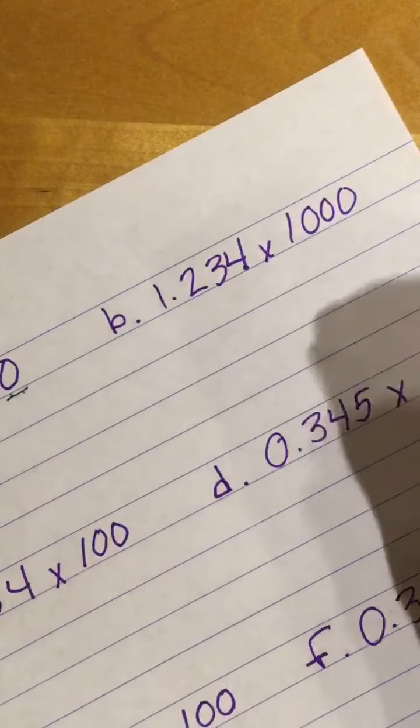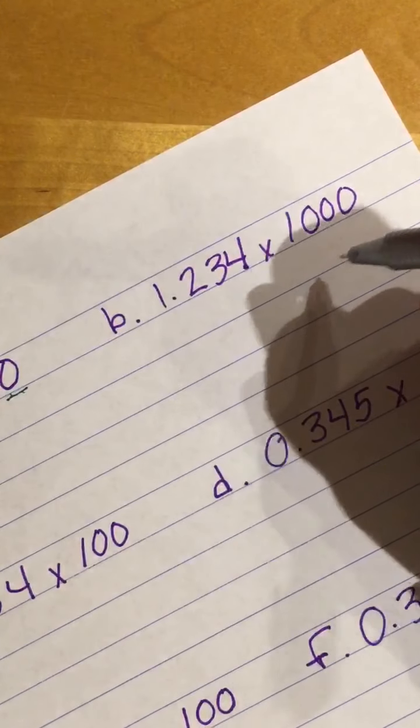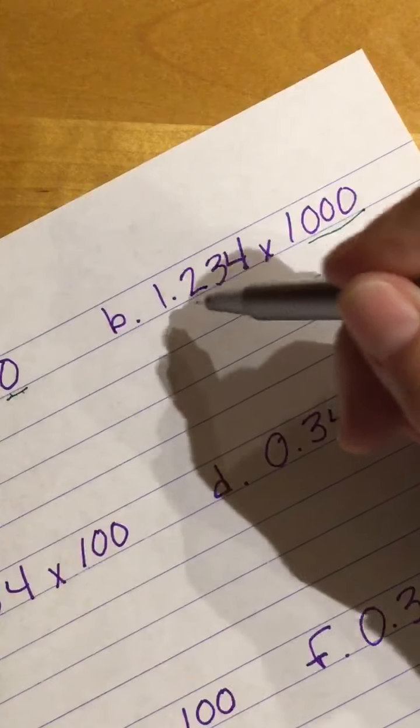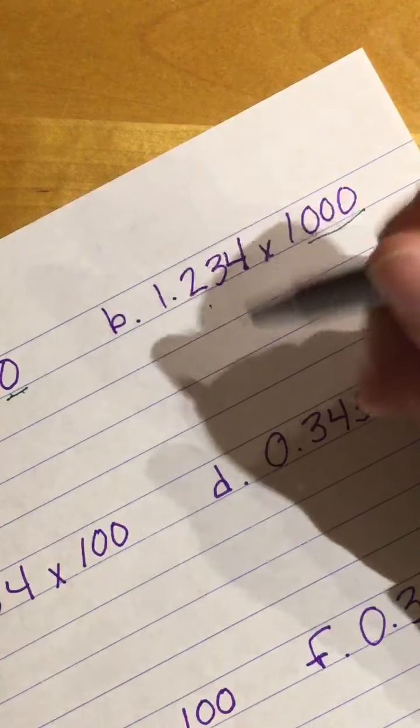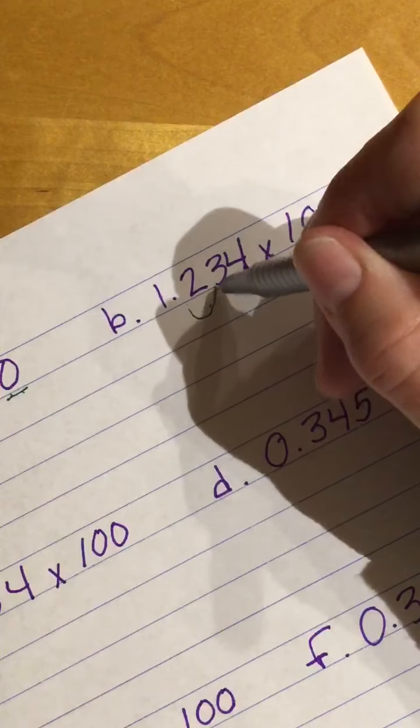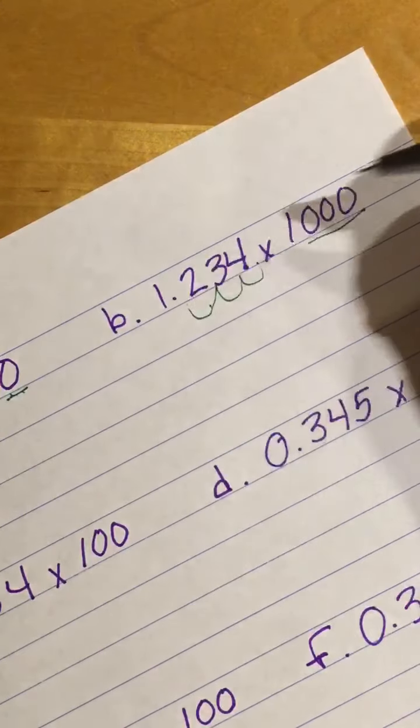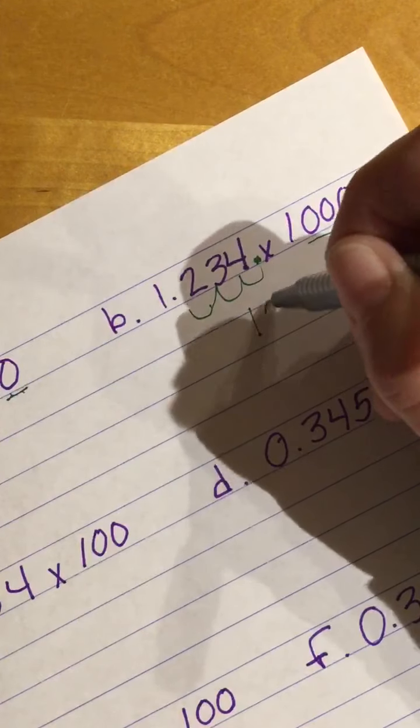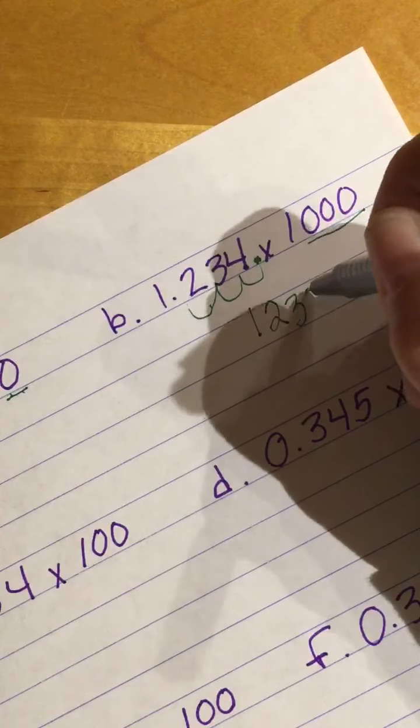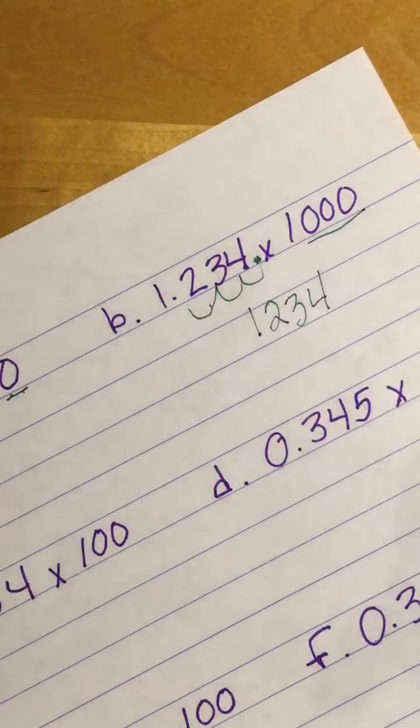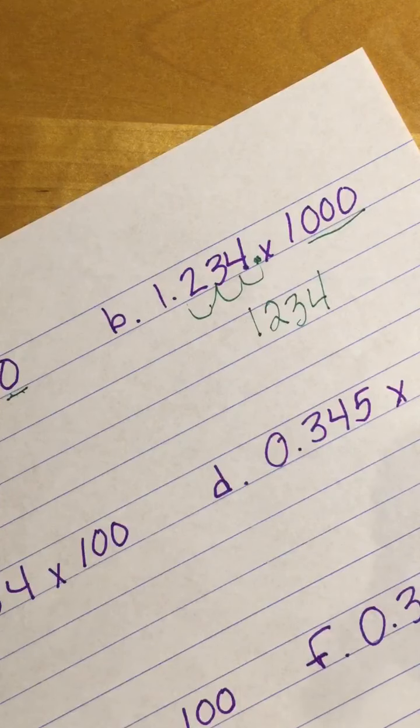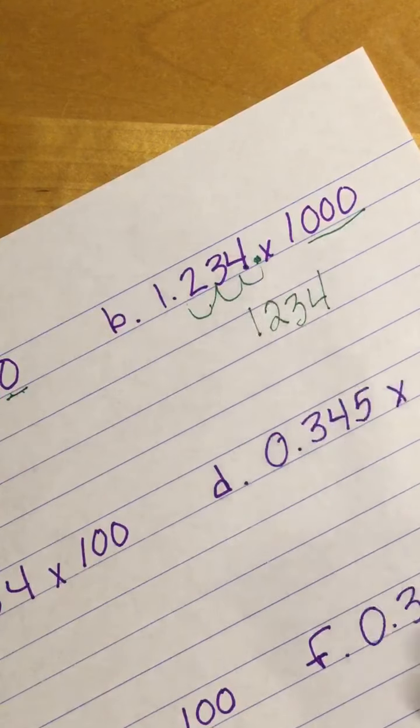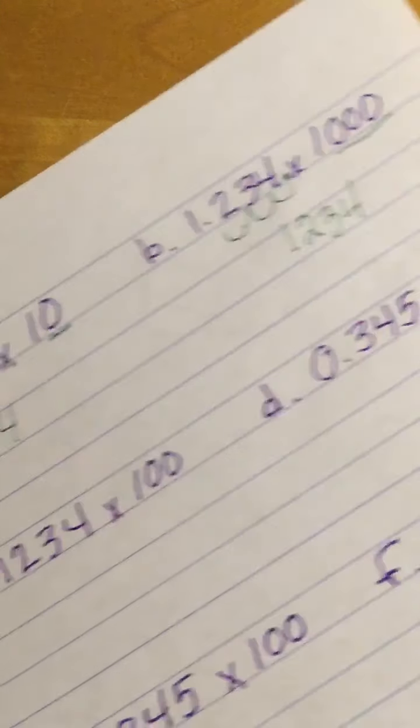On this problem, I am B, I have three 0s. So my decimal point is going to shift. I need a better pen. One, two, three. So my decimal point is going to end up right there. I have one, two, three, four, which means I have 1,234. So one and two hundred thirty-four thousandths times a thousand equals 1,234.